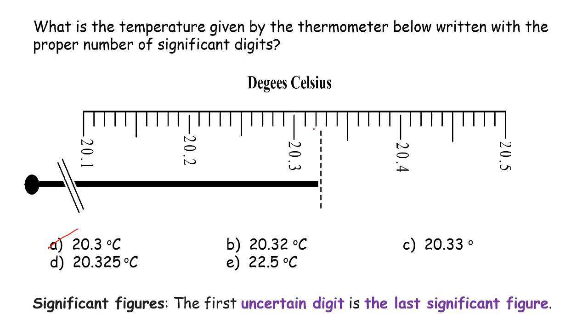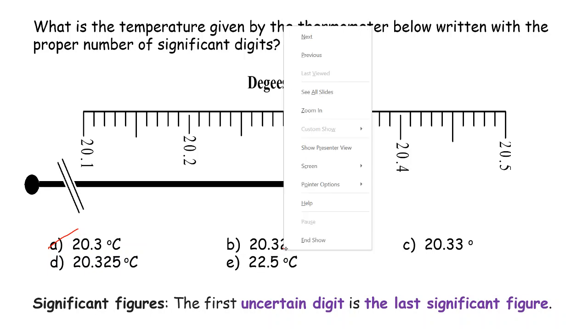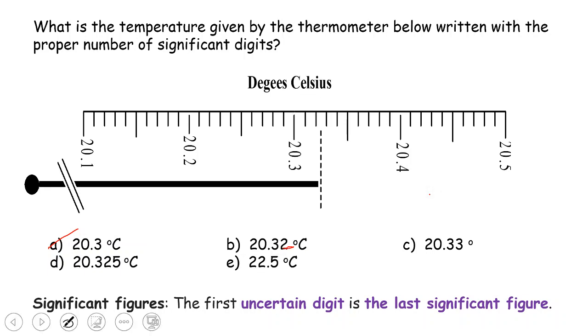And based on the digit of 2, so that's also certain. So then based on the definition right here, that should be uncertain. But in this case, it is certain. So therefore, B is also out.